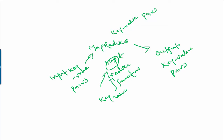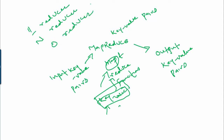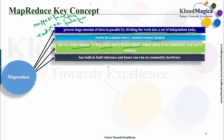The key in the Map output pairs need not be unique — these key-value pairs can be duplicates, meaning two or more different pairs of input can have the same key. A MapReduce job always has a Map phase, but the Reduce phase is not mandatory and can be omitted. Depending on the requirement, we can have one Reducer, multiple Reducers, or zero Reducers. MapReduce has built-in fault tolerance and can run on commodity hardware very efficiently.